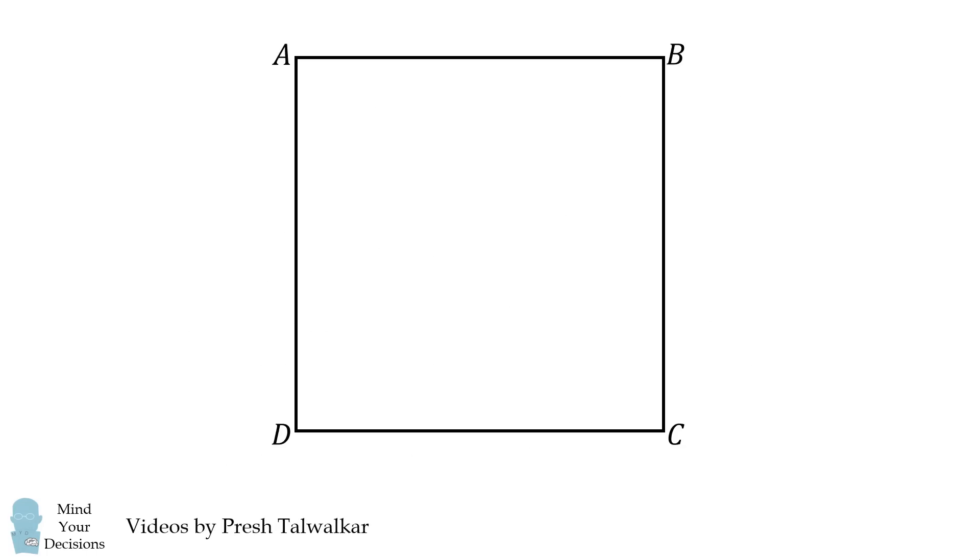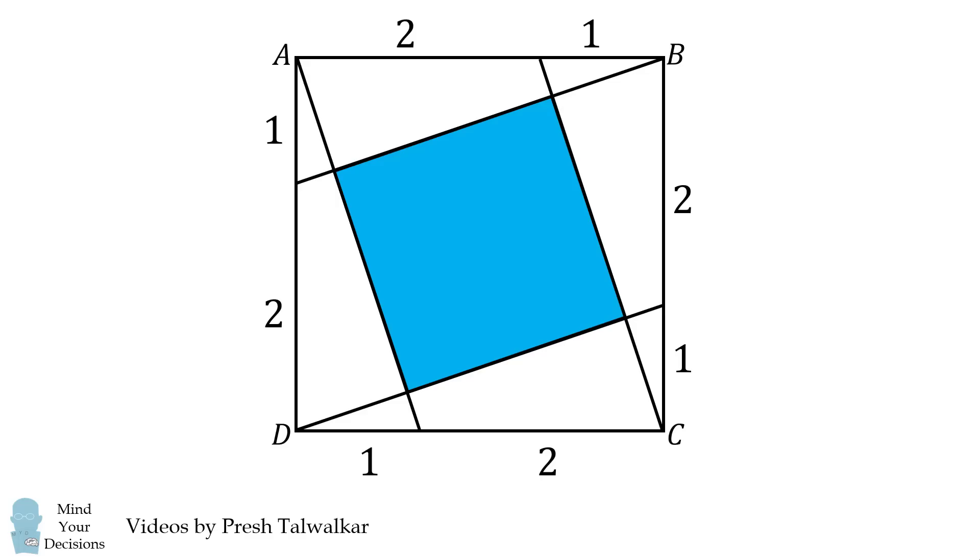Mind Your Decisions, I'm Presh Tollwakar. In square ABCD, connect the corner A to the opposite side DC, dividing it into lengths of 1 and 2. Repeat this procedure for the other three corners of the square. The result will be four lines that bound a square shown in blue.